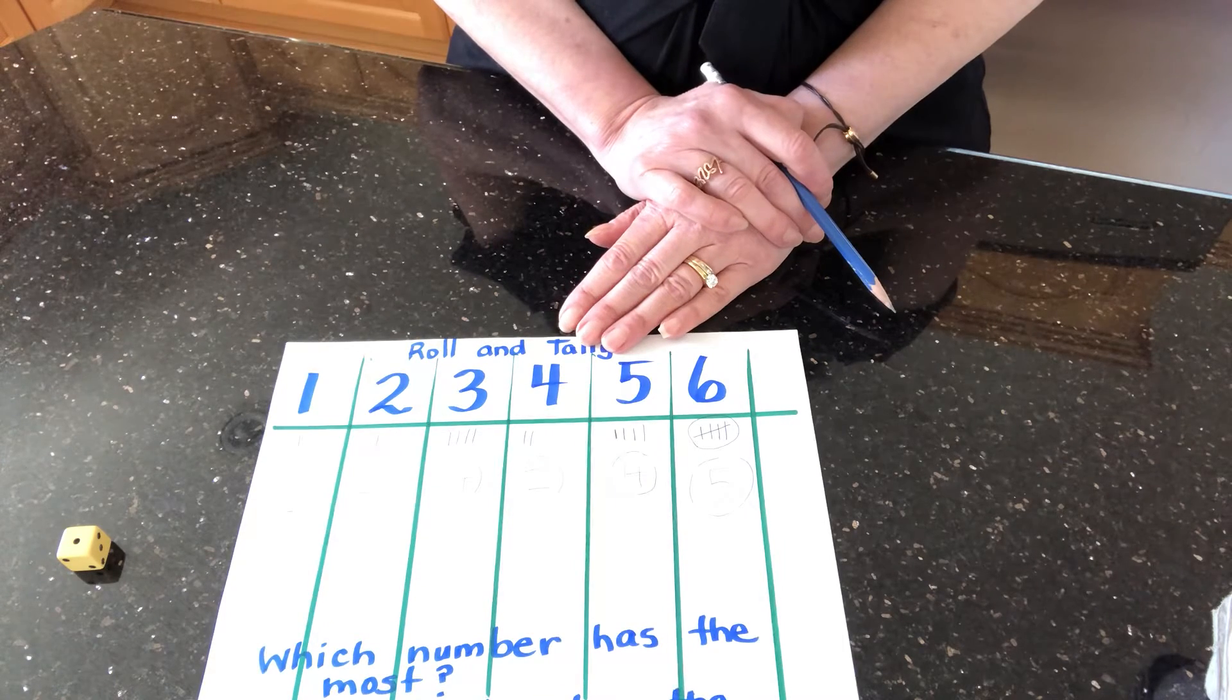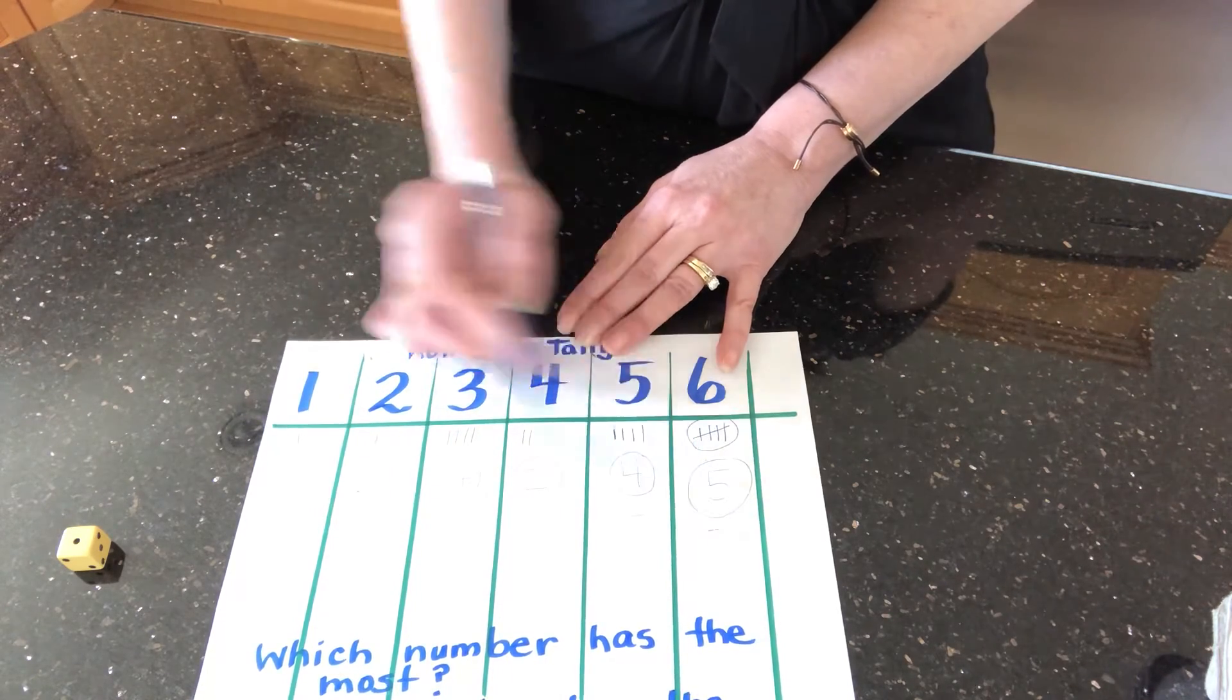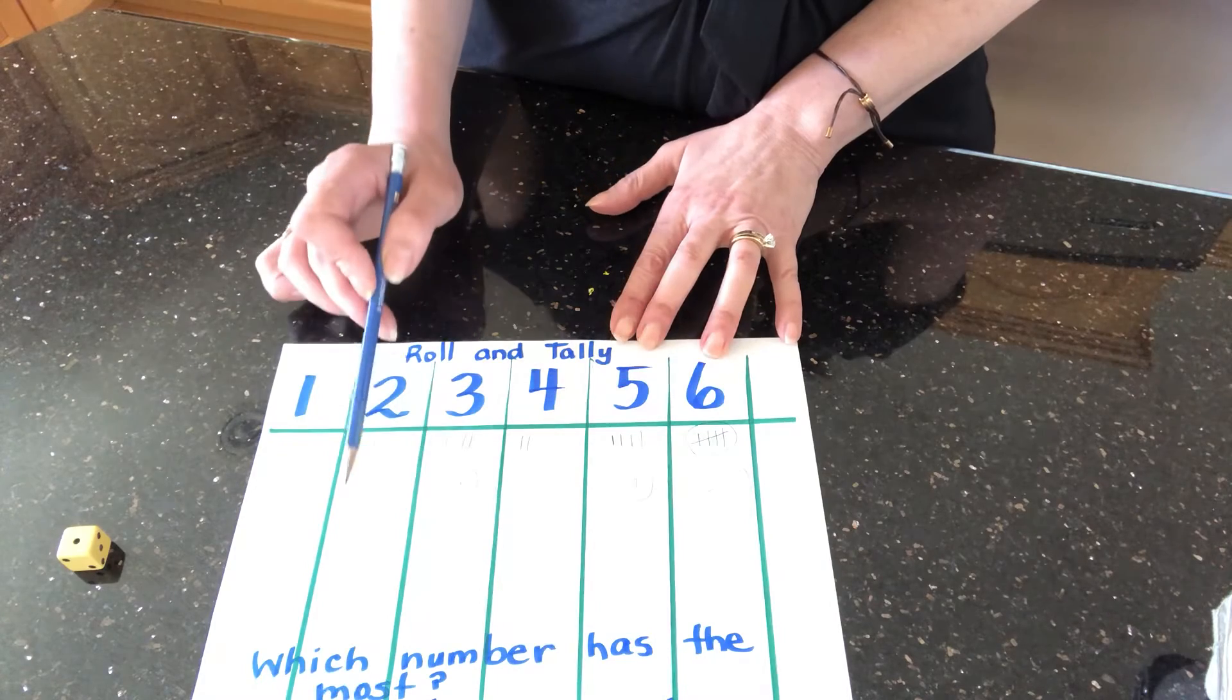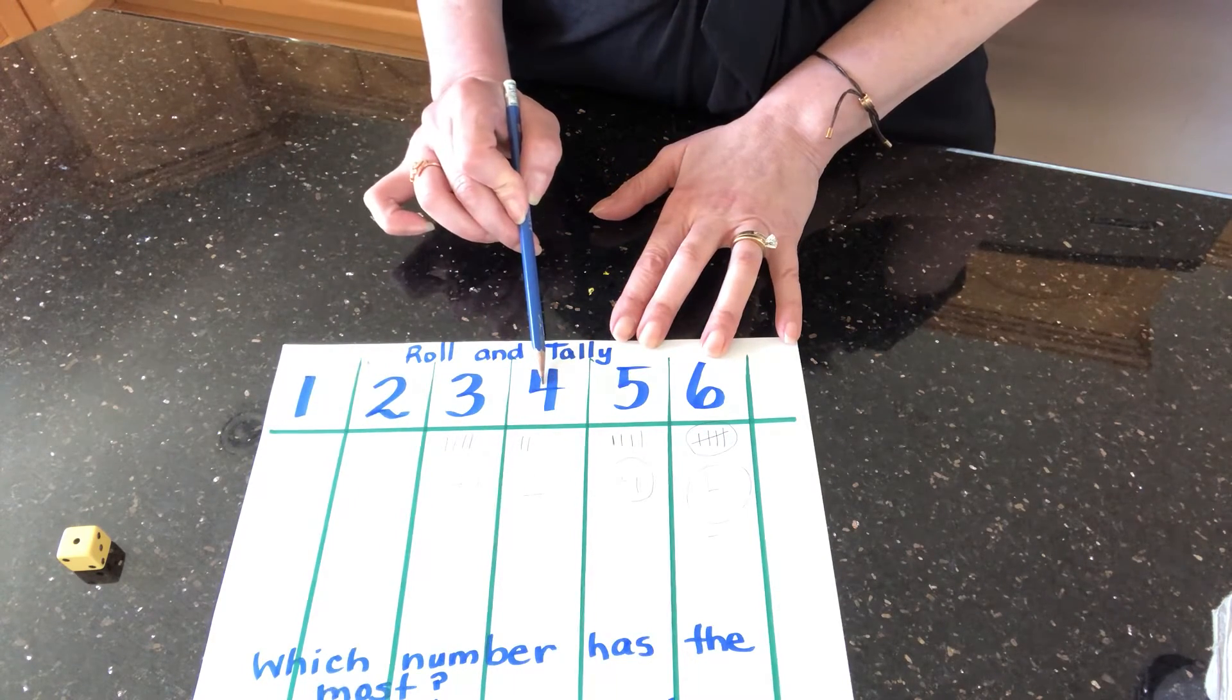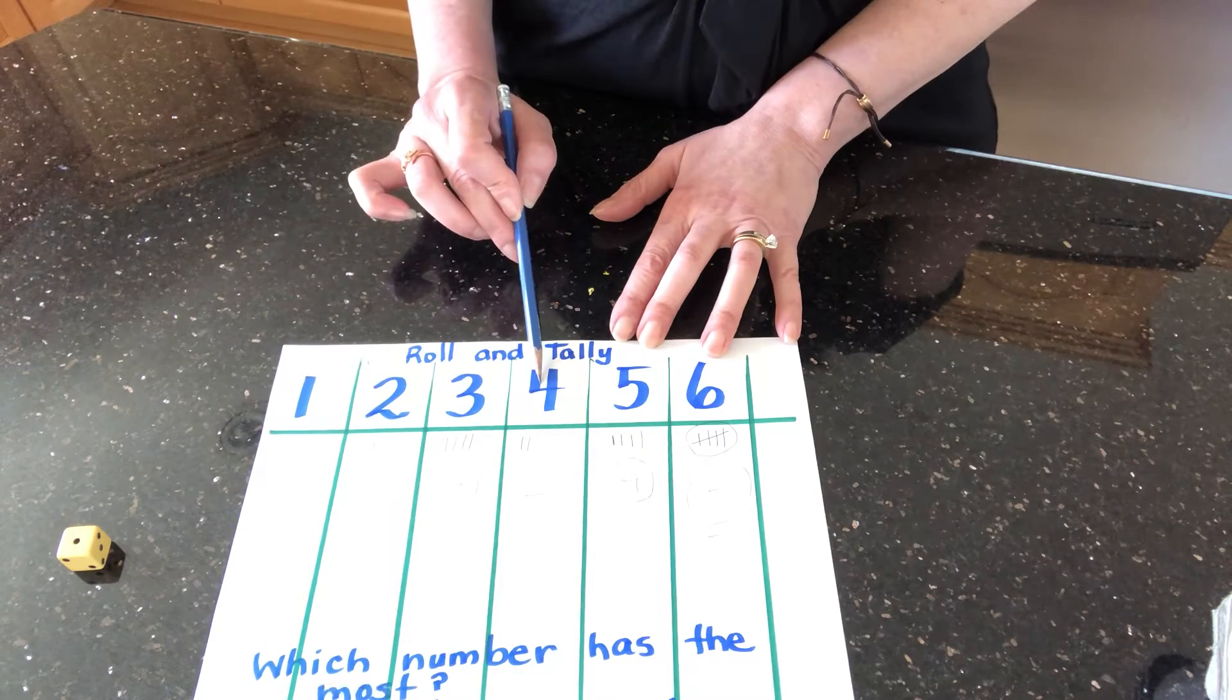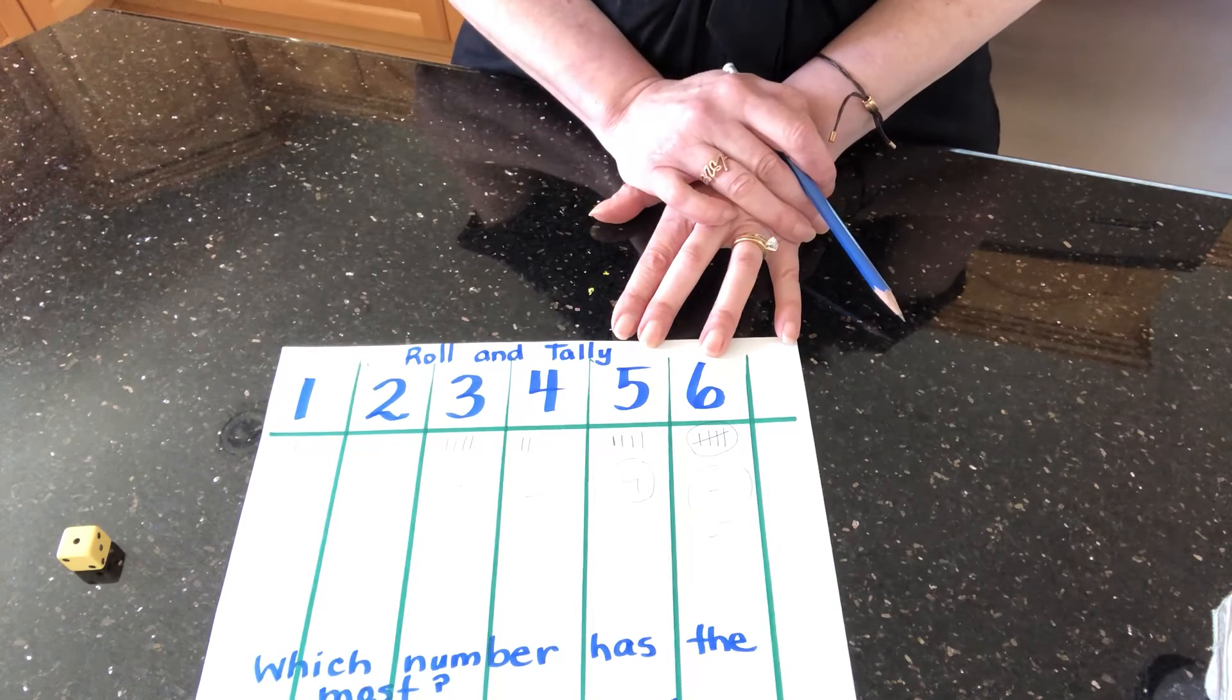You're right. Now, I'm going to look which number has the least. I think there's a tie for the least. So, I'm going to say two and four have the least. They're actually tied with the least. Two and four are tied with the least amount of tally marks.